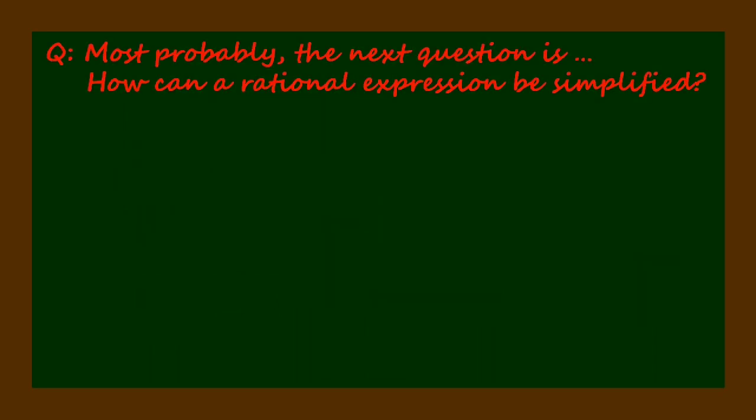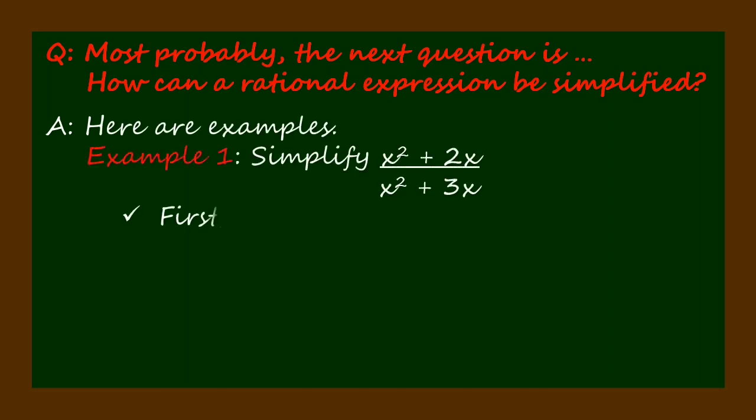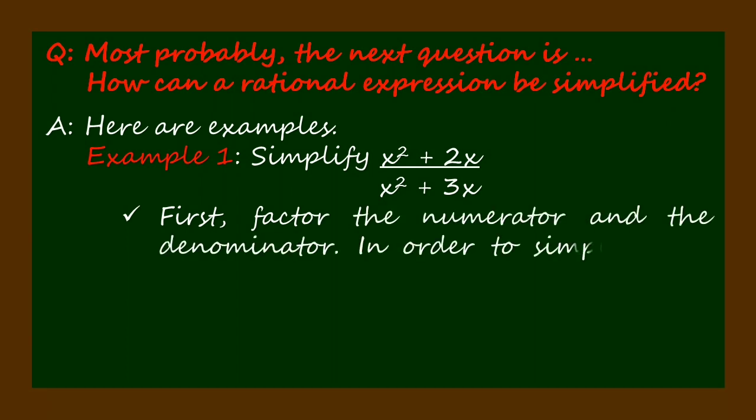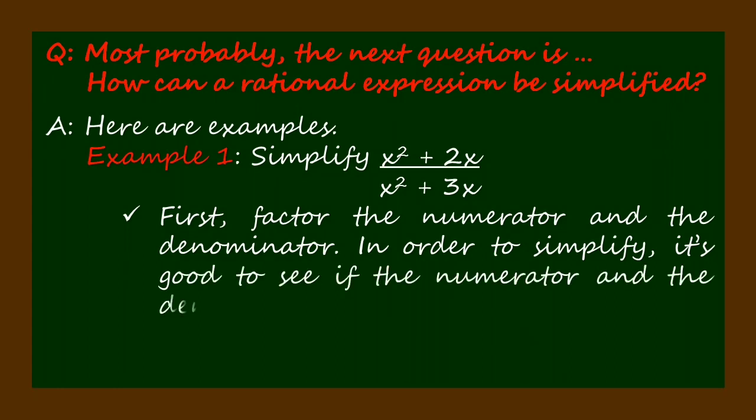Most probably, the next question is: How can a rational expression be simplified? To answer the question, here are examples. First, factor the numerator and the denominator. In order to simplify, it's good to see if the numerator and the denominator share common factors.